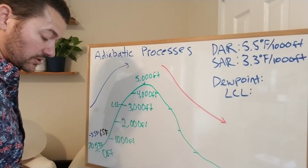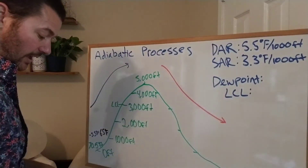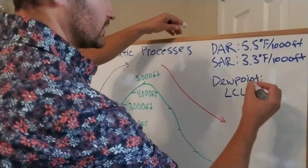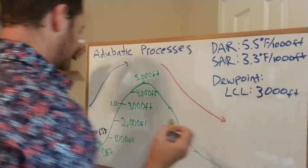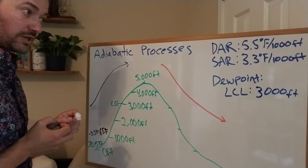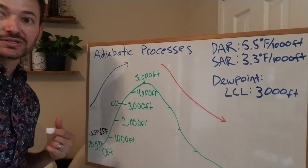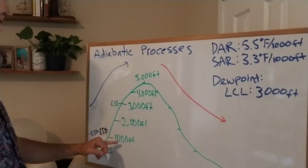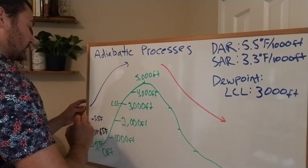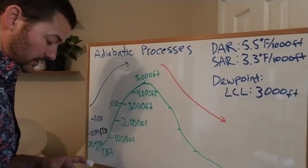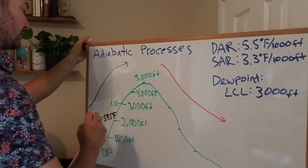Let's say you can see clouds at 3,000 feet, so the LCL is at 3,000 foot elevation. From 1,000 feet to 2,000 feet, we subtract 5.5 again — air is still dry, still ascending, still cooling — so our temperature at 2,000 foot elevation is 59.5 degrees Fahrenheit. On the exam you can use a calculator.